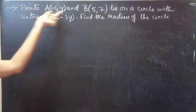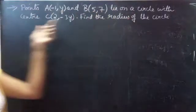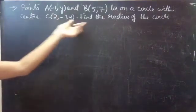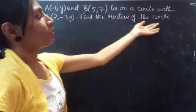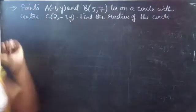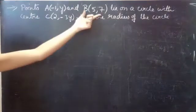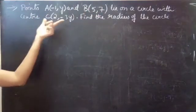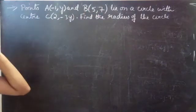Points A and B lie on a circle with center C. Find the radius of the circle. We are given two points which lie on the circle and a center.